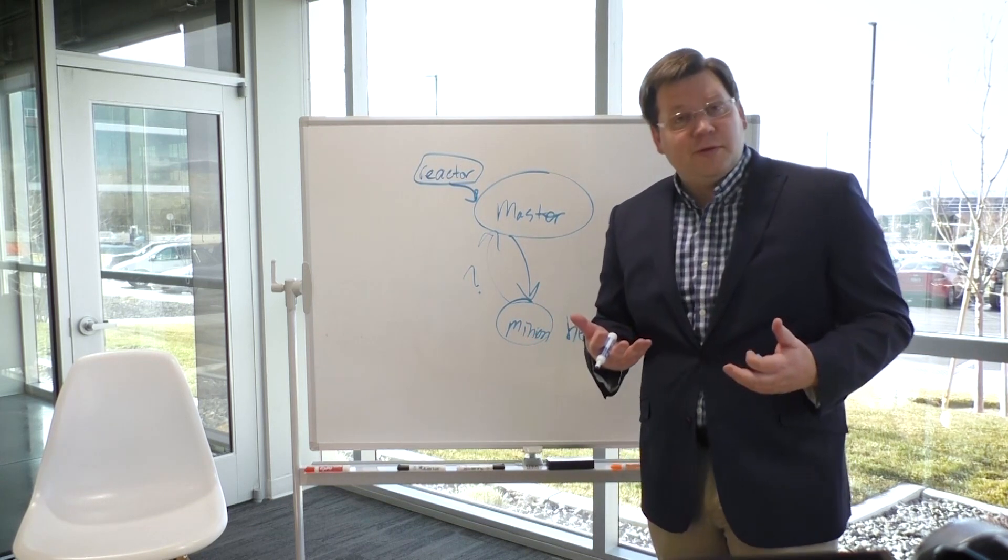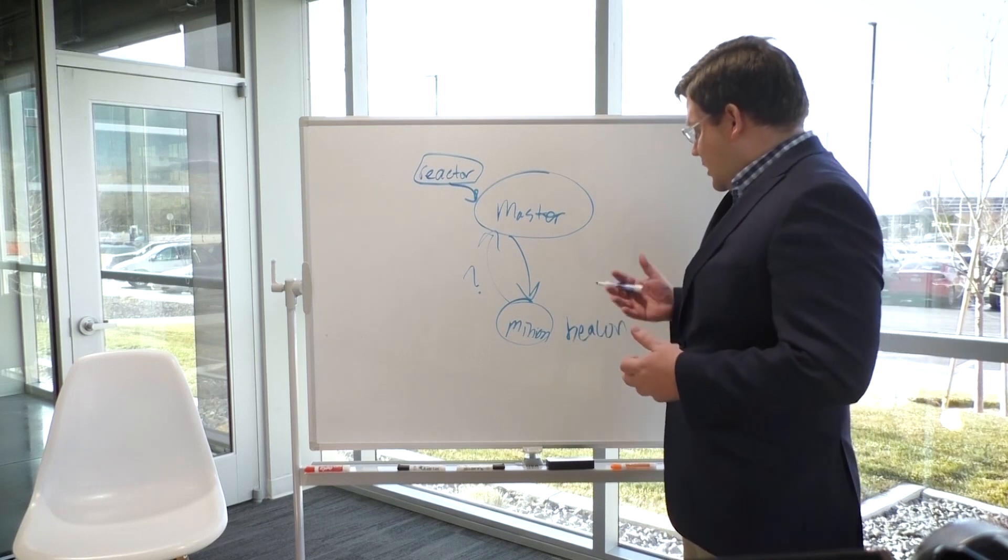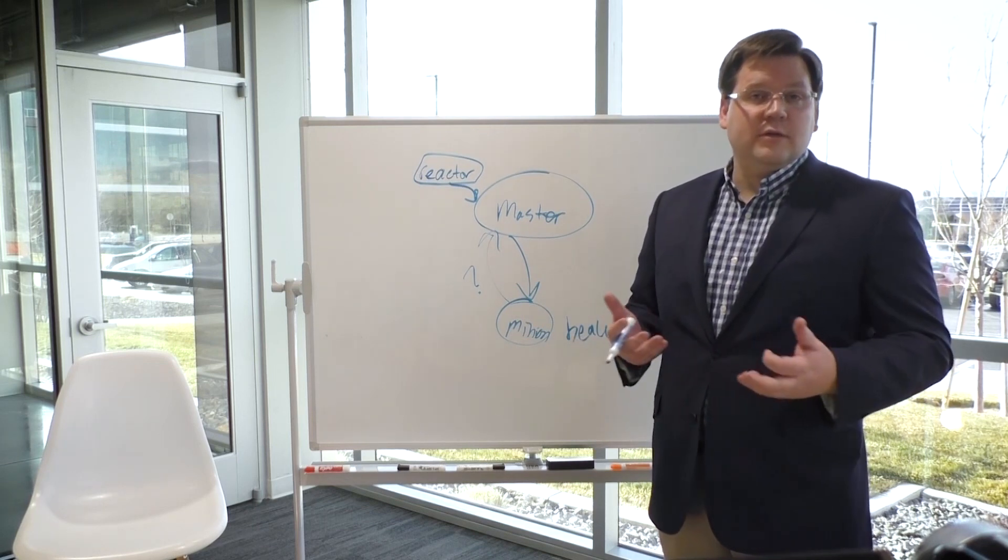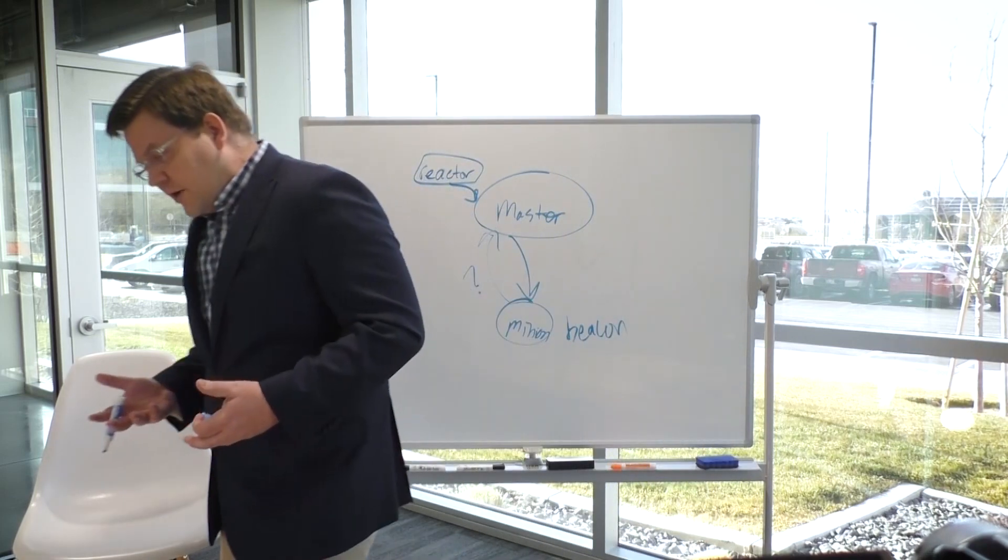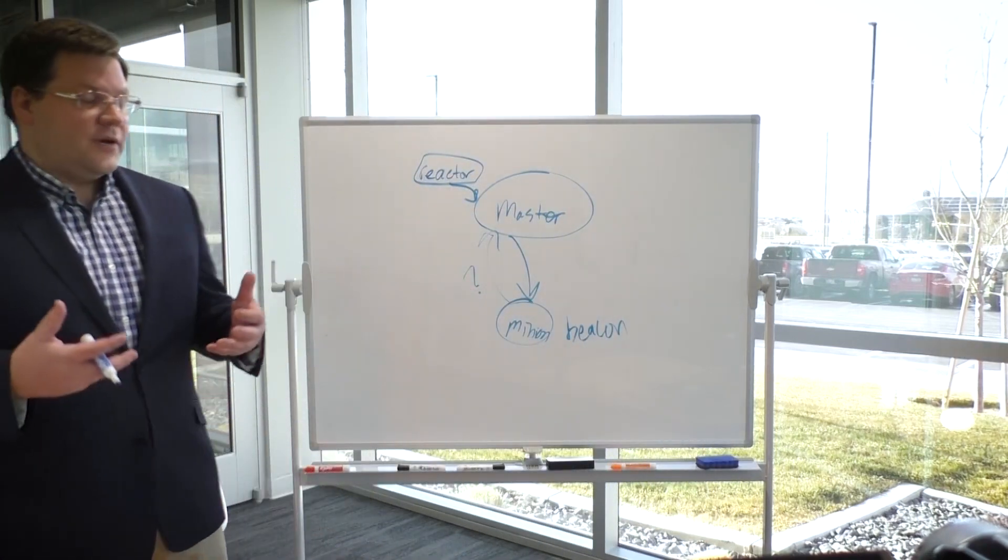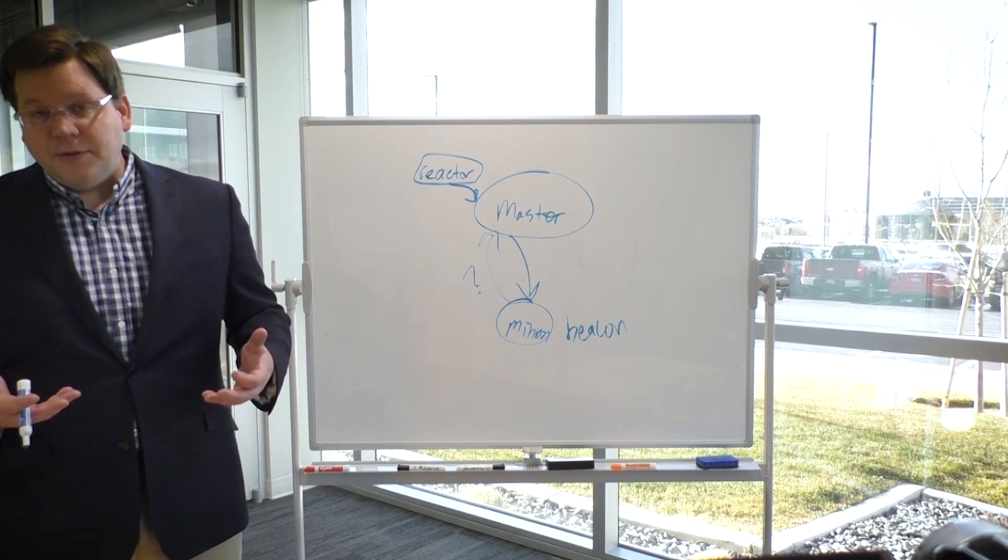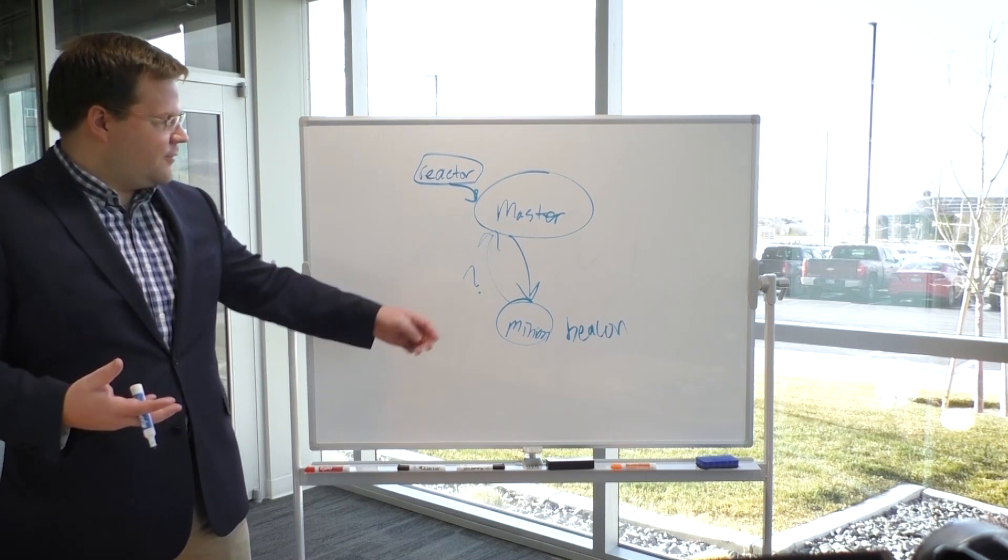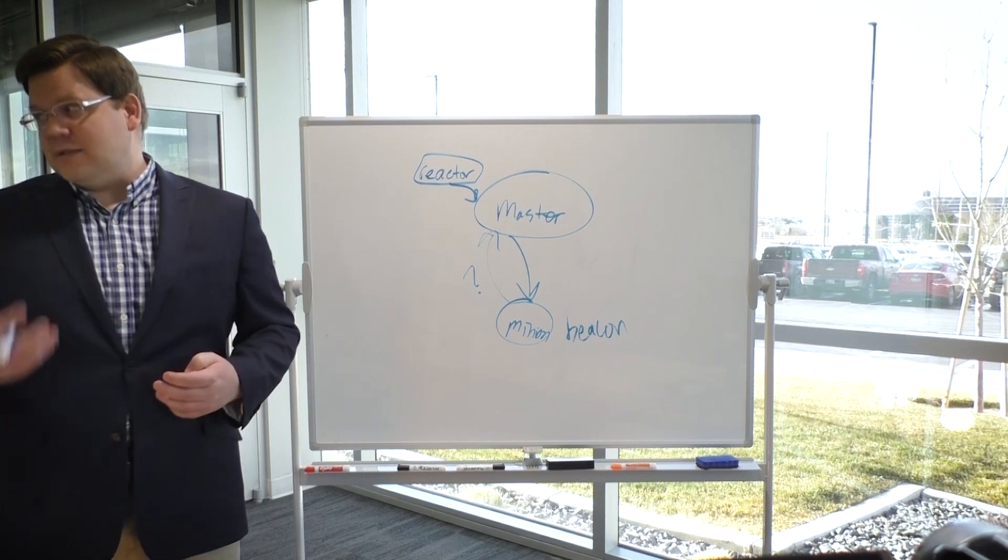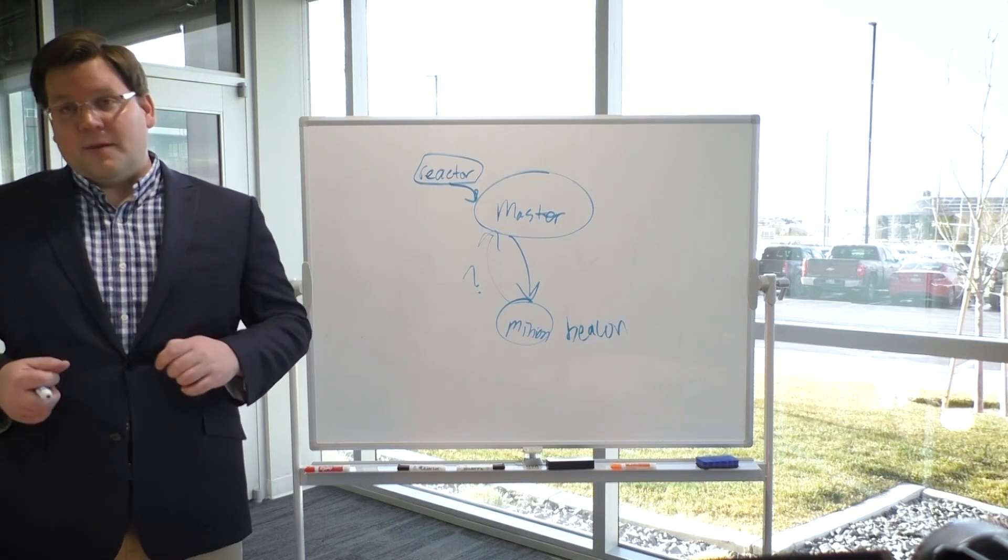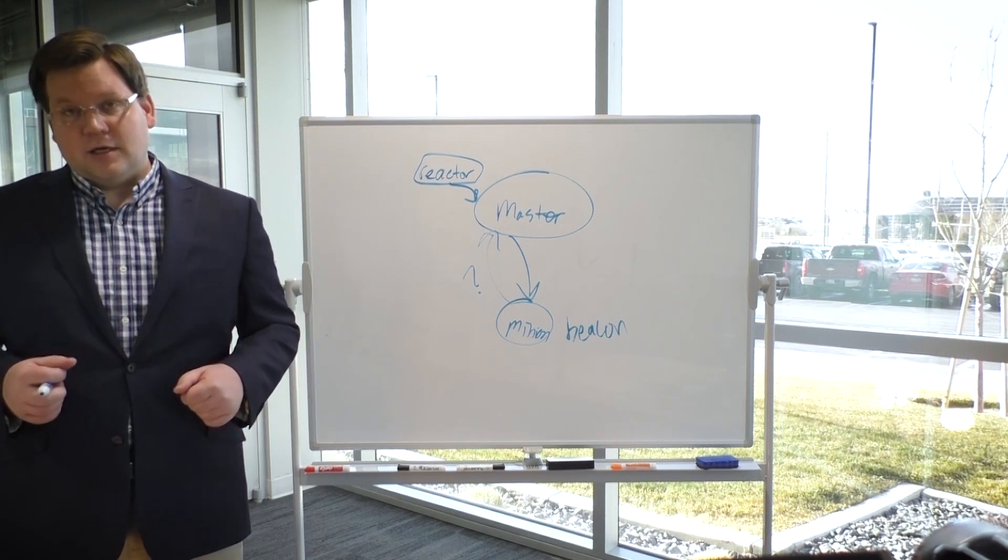So as an example, let's say that we've got a beacon that is watching file system space. And so if the file system space gets filled up, then it would be easy for that file system beacon to say, I'm going to start firing events. I'm above 95% capacity on this drive.